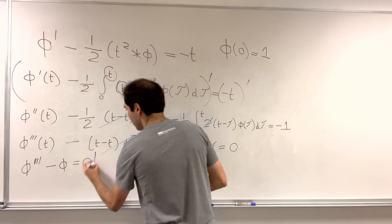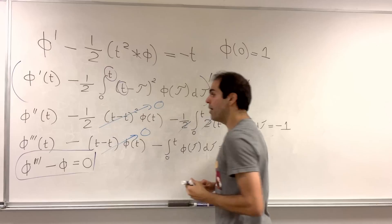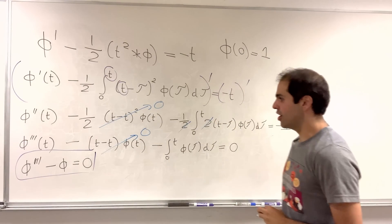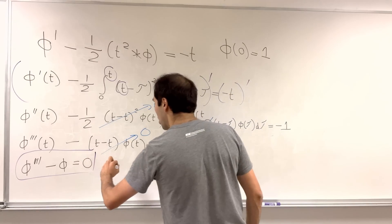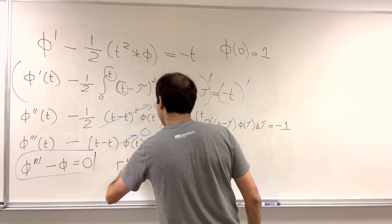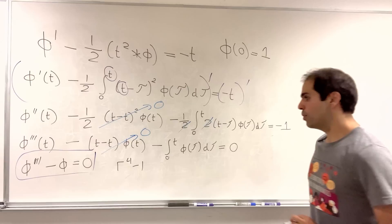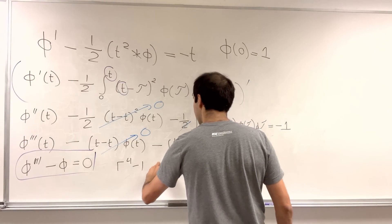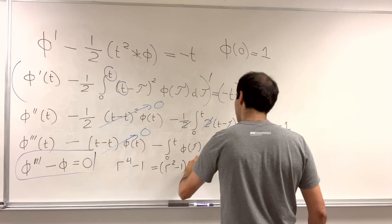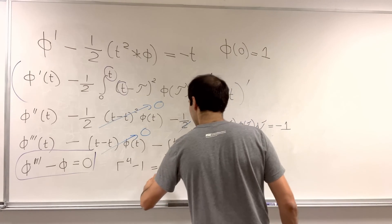which is a much easier differential equation, because it's constant coefficient. So, in this case, the auxiliary equation is r fourth minus one, but which can be factored out as r squared minus one, times r squared plus one.